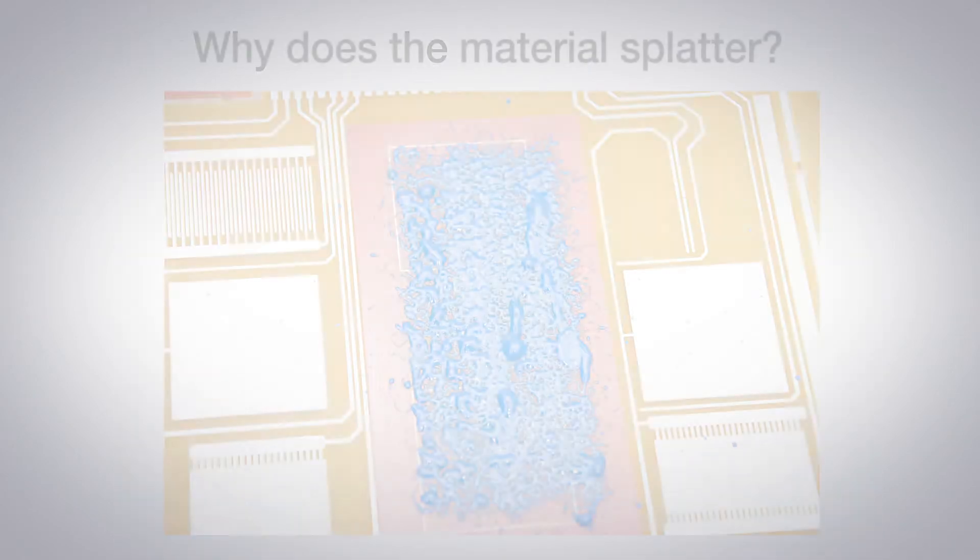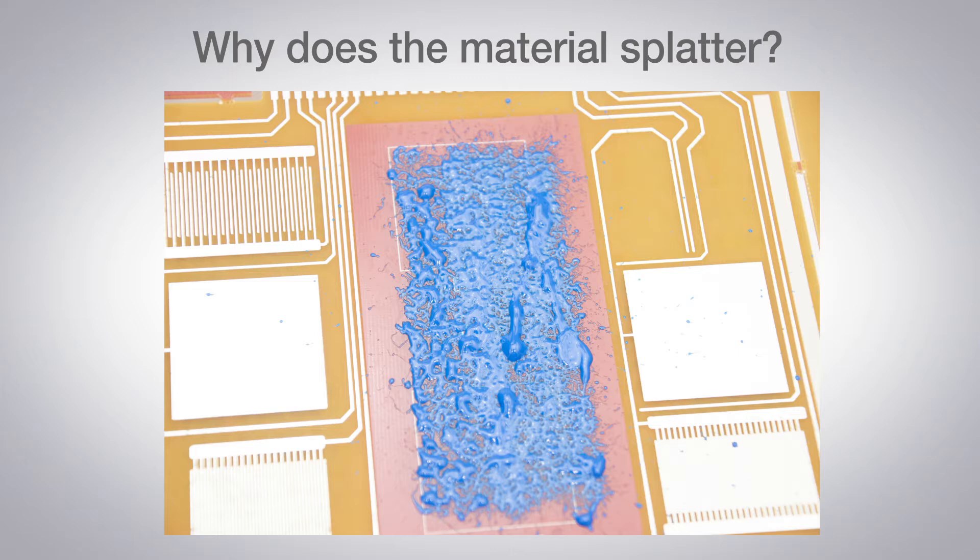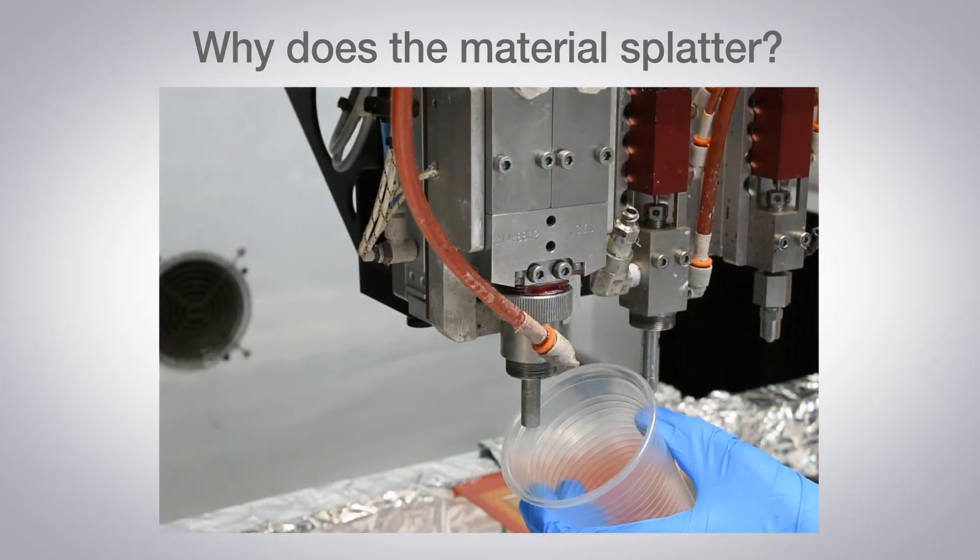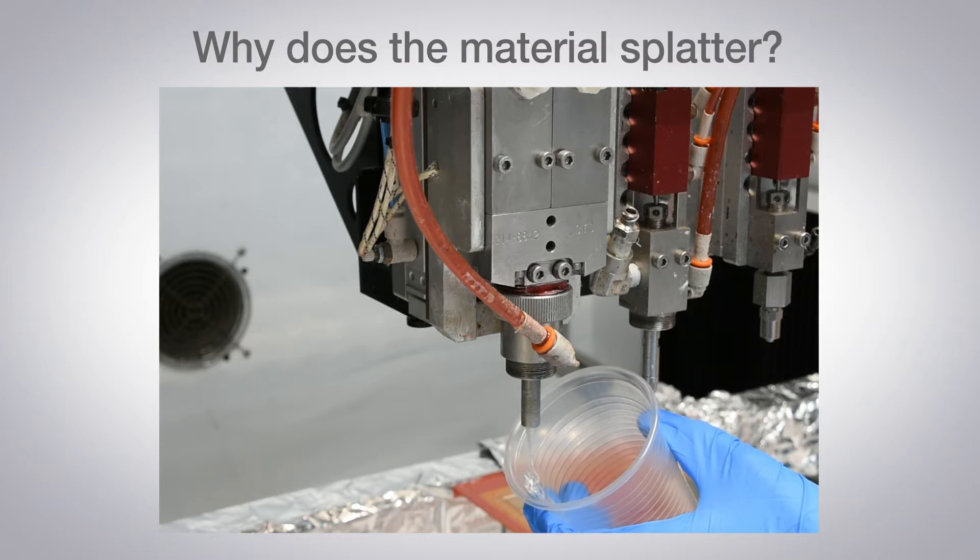Why does the material splatter? Purge, purge and purge again. If you find the material is splattering when it is applied, there are several possible causes.